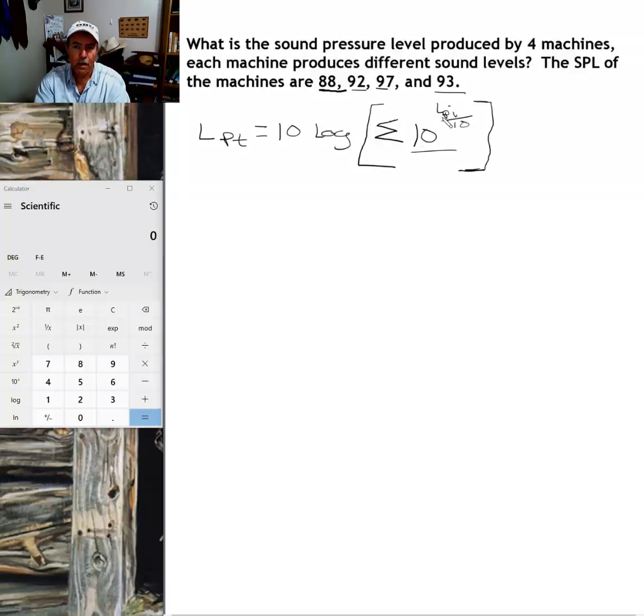That mathematical operation is right here. We got 10 to the power of an exponent. The exponent is L sub P I divided by 10. It's a fractional exponent. Don't freak out yet. Let me talk about what we mean by L P I. L P I is the individual pressure level for each of the machines.